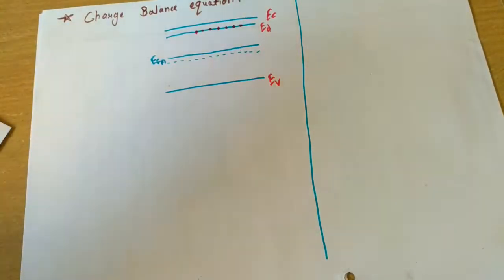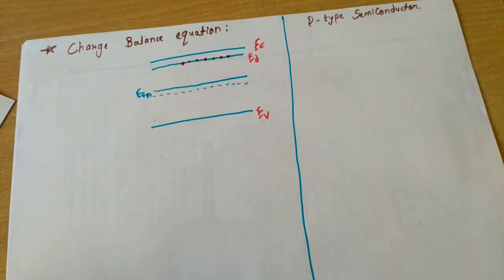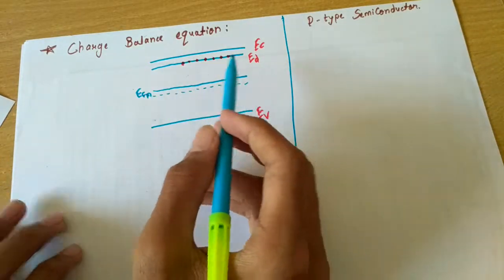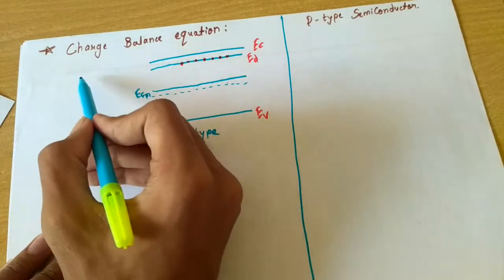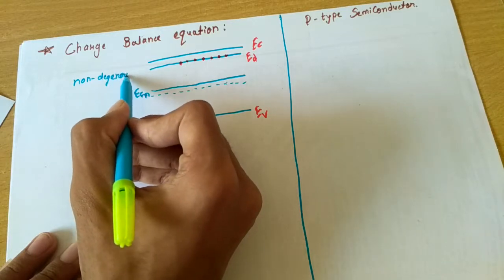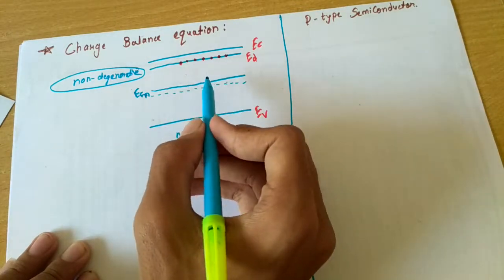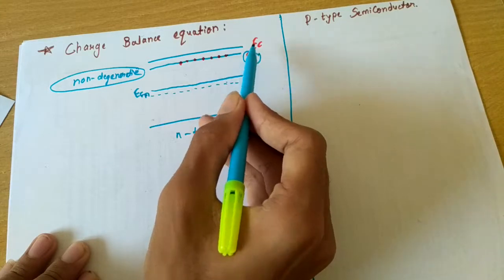In this lecture we will be discussing the charge balance equation of an n-type semiconductor, and we will now be moving towards p-type. All things about n-type semiconductor are completed after this charge balance equation. This is the energy band diagram of an n-type semiconductor, showing EFN. We are talking about non-degenerate cases here. As we know, this is the energy band diagram, and what happens is that this donor energy level